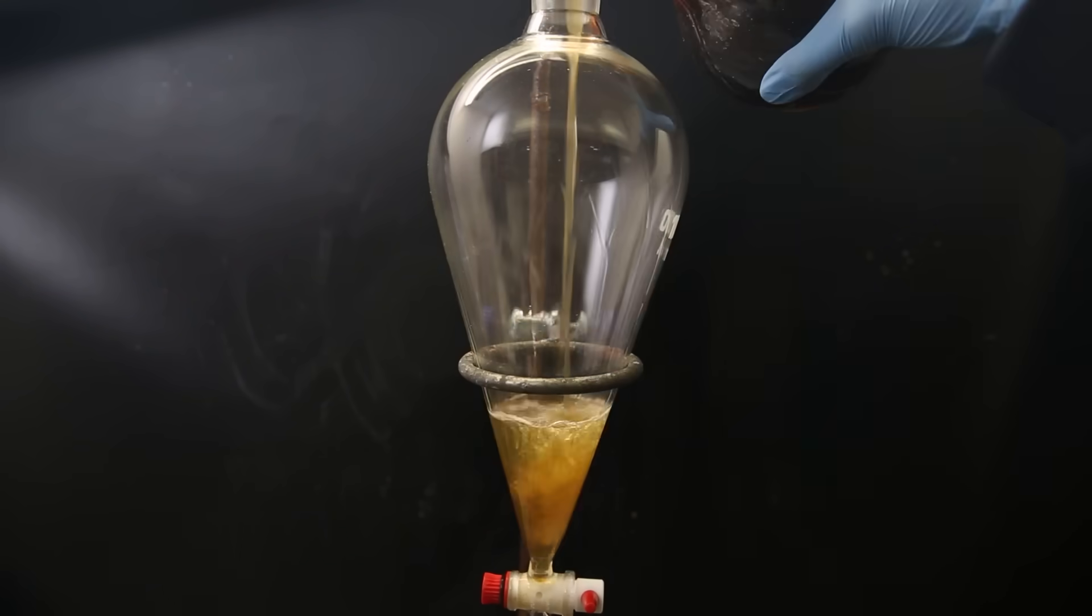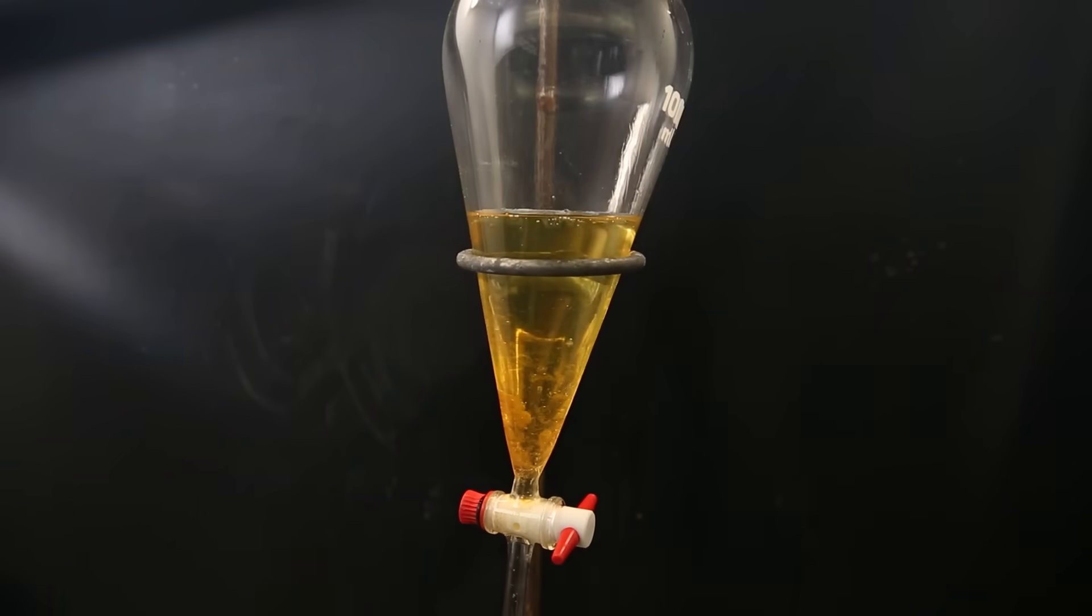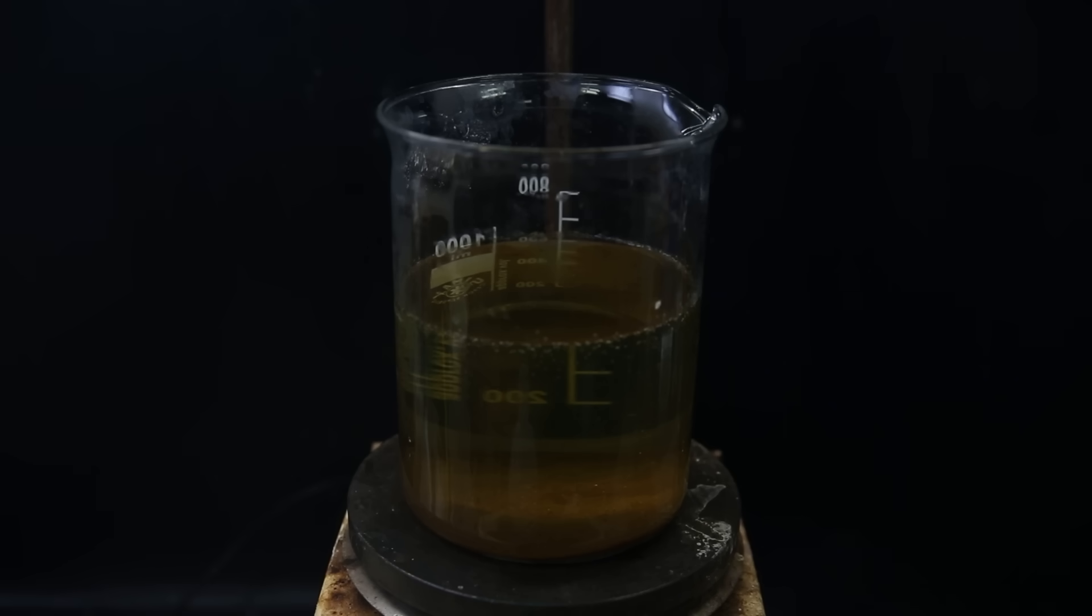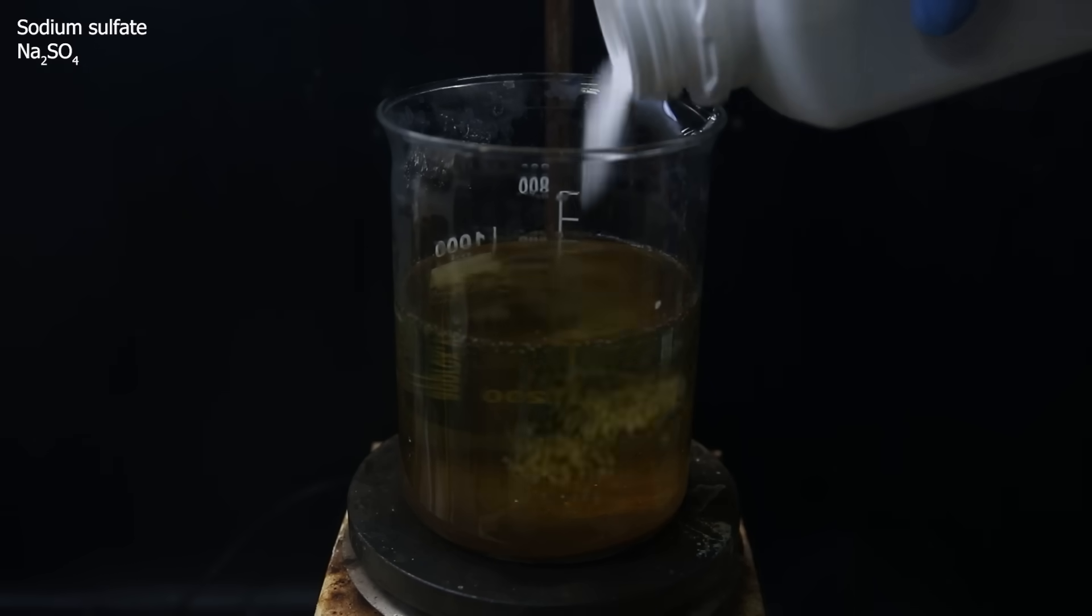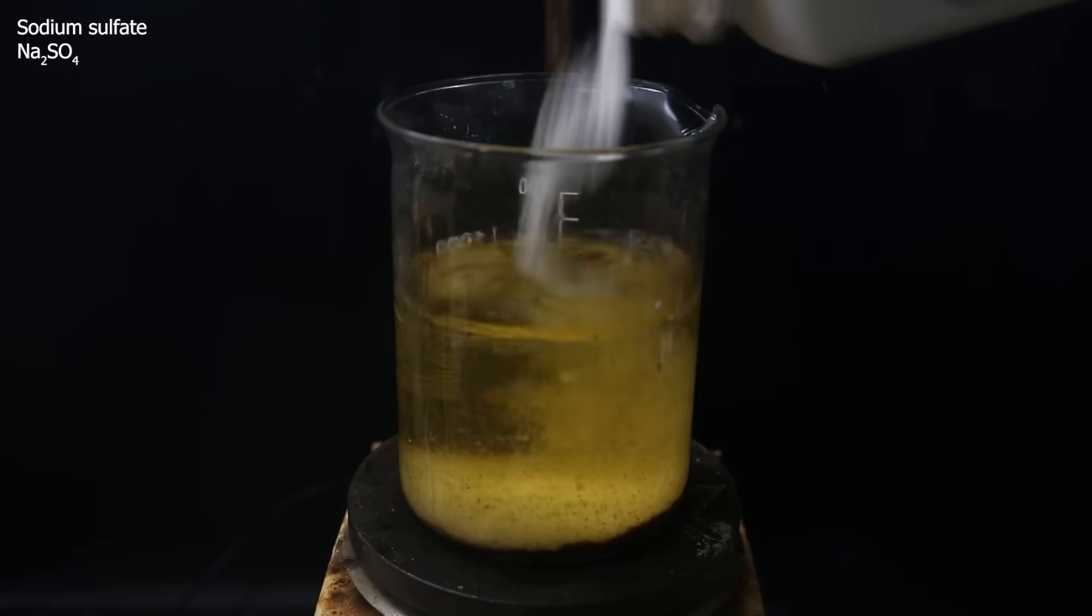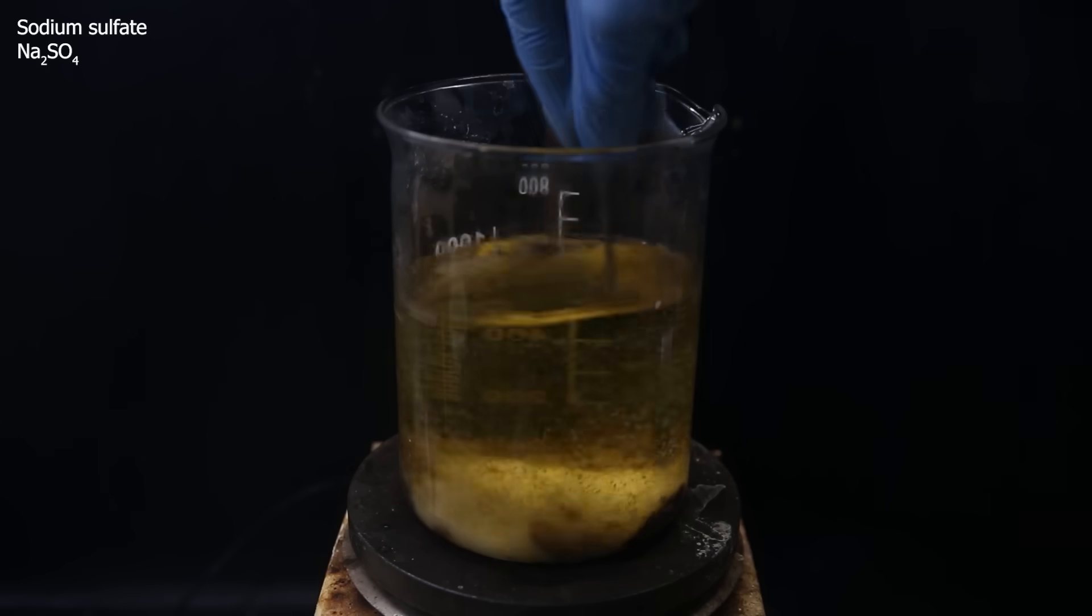I move the mixture to a separatory funnel and then separate the bottom water layer from the top ethyl acetate layer. I collect the ethyl acetate layer and then return the water layer to the funnel again to extract it once more with ethyl acetate. I am then left with the ethyl acetate extract that contains some watery junk that is difficult to separate. So to absorb that I add a large amount of the drying agent sodium sulfate, which will absorb the water and hold on to the crap.